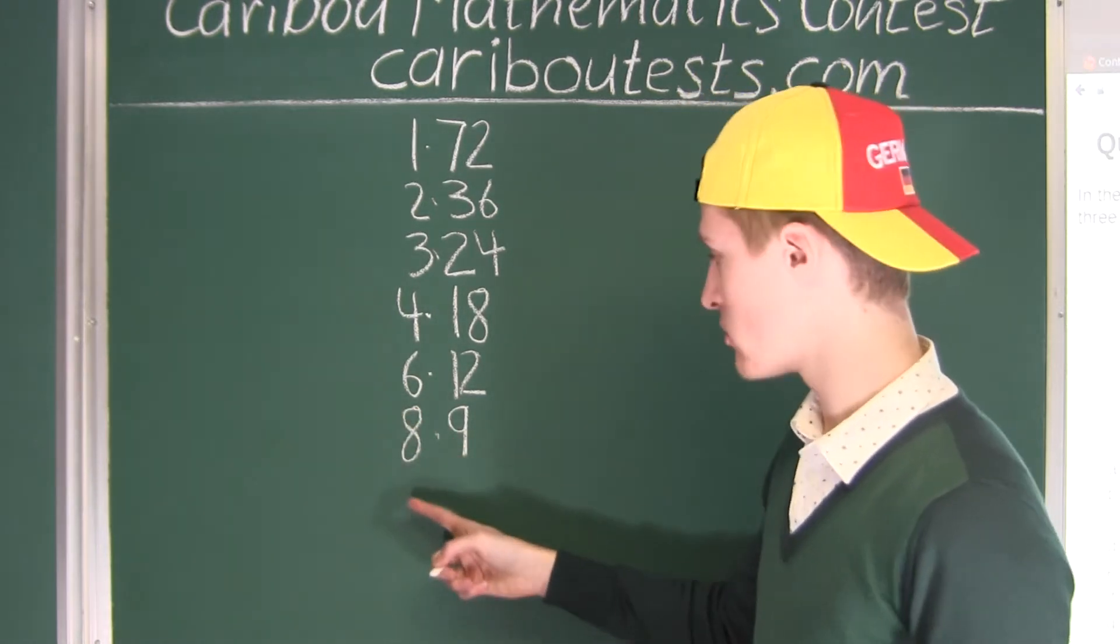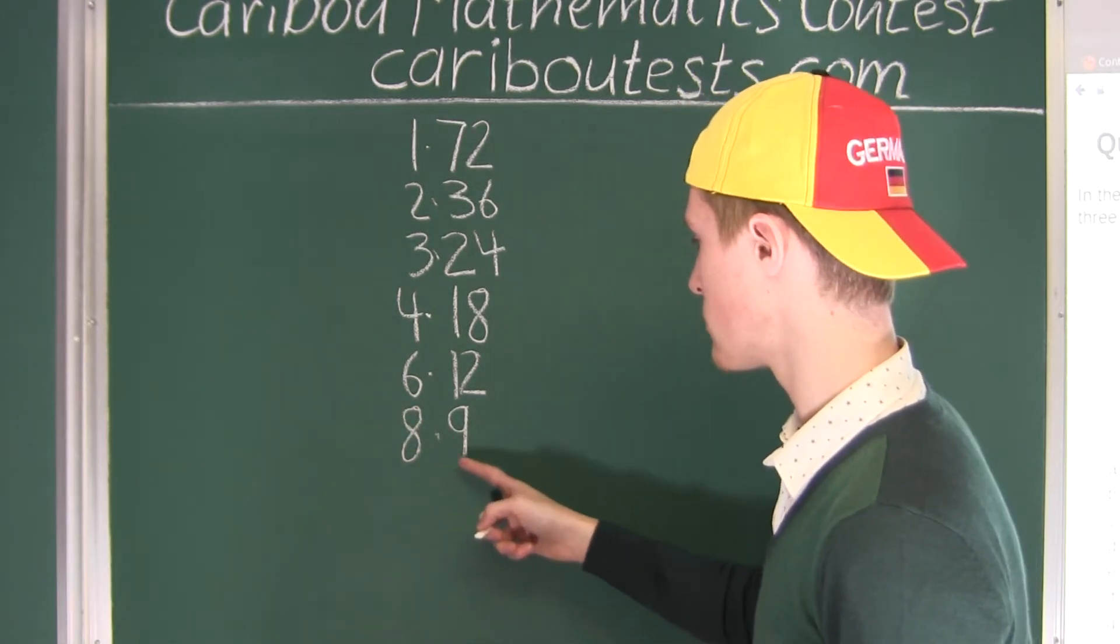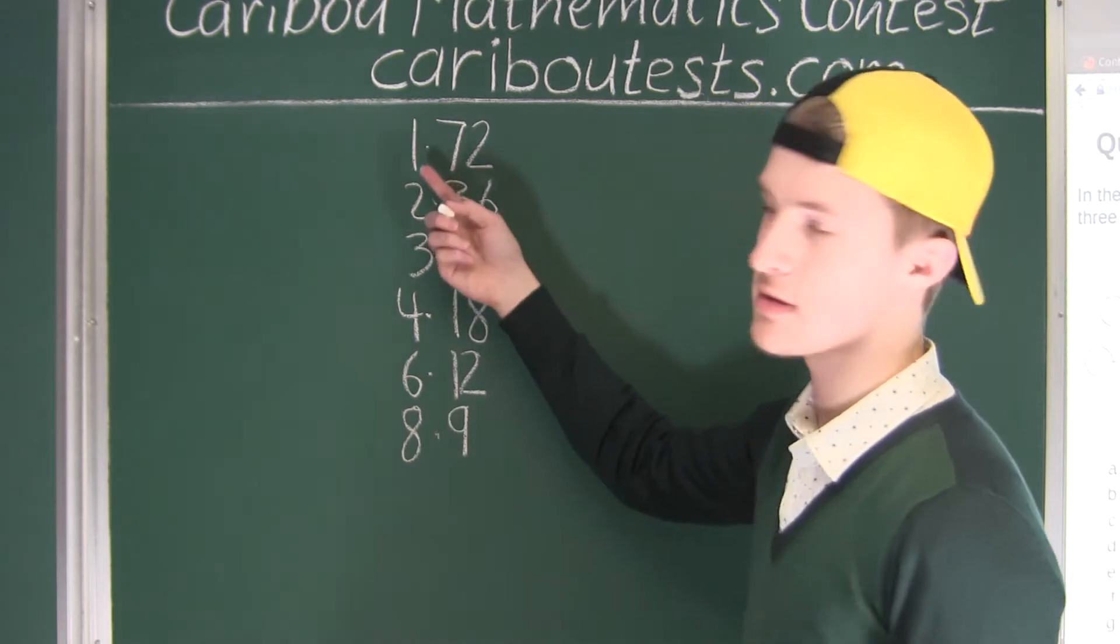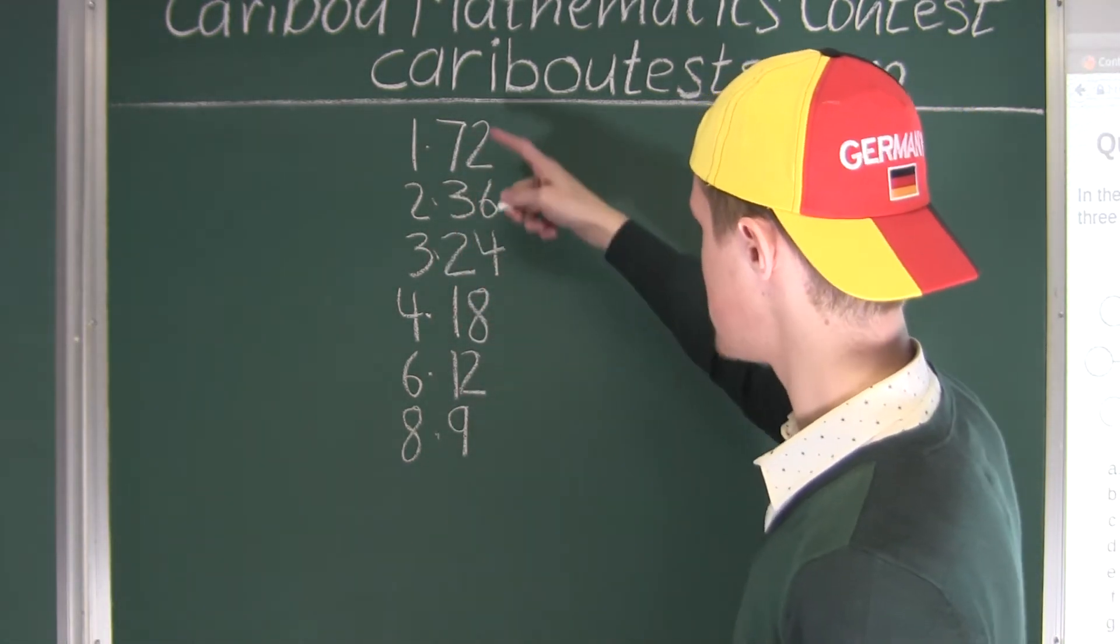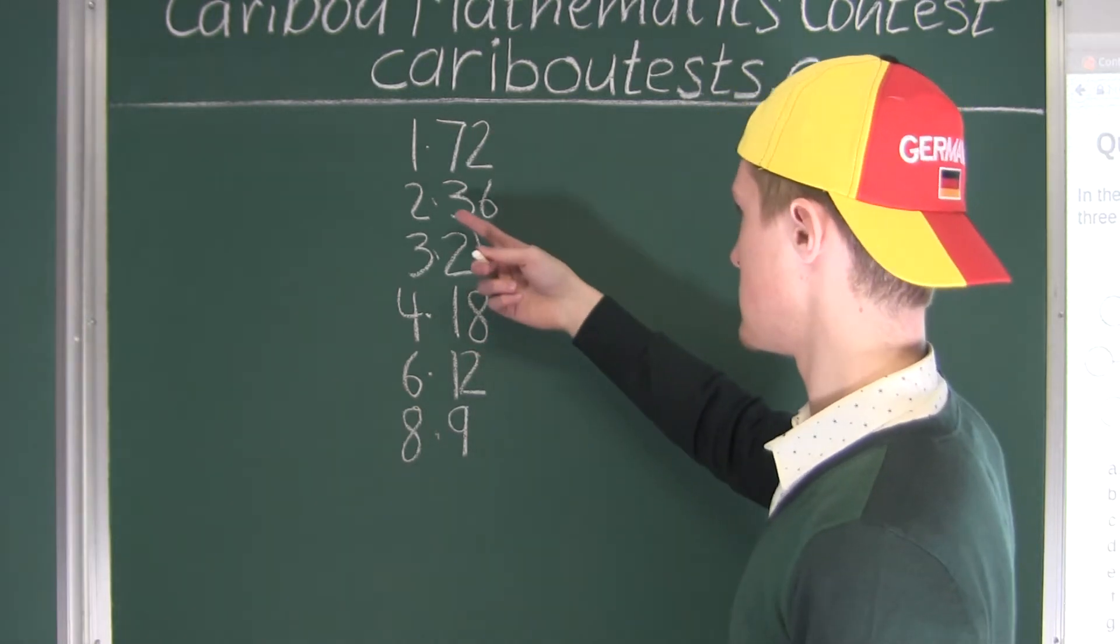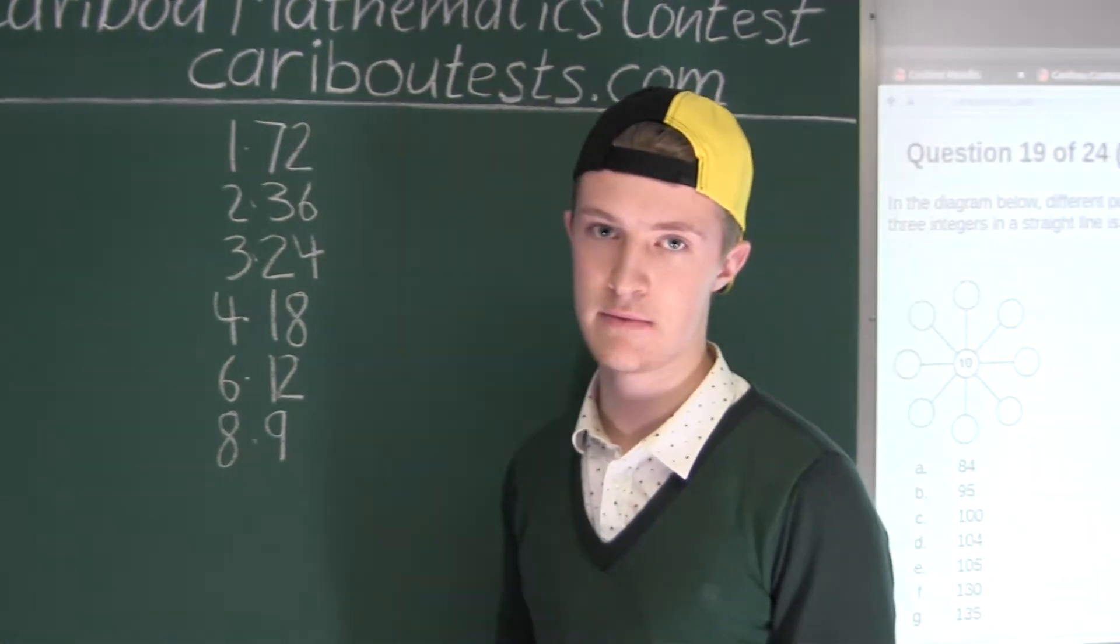Now the next number would be 9, but then that would be paired with 8, and then we would just have all these pairs with the numbers reversed. So these are the 1, 2, 3, 4, 5, 6 different pairs of positive integers that all have a product of 72.